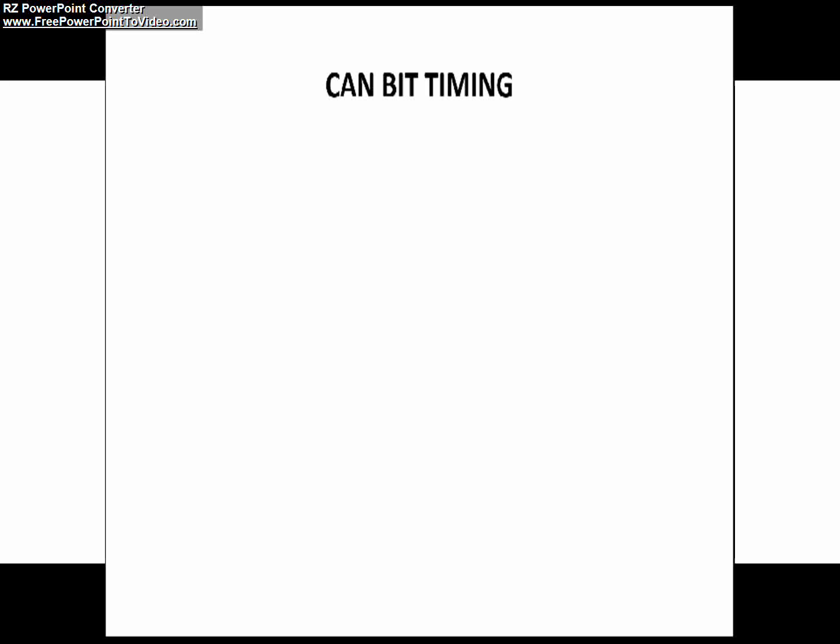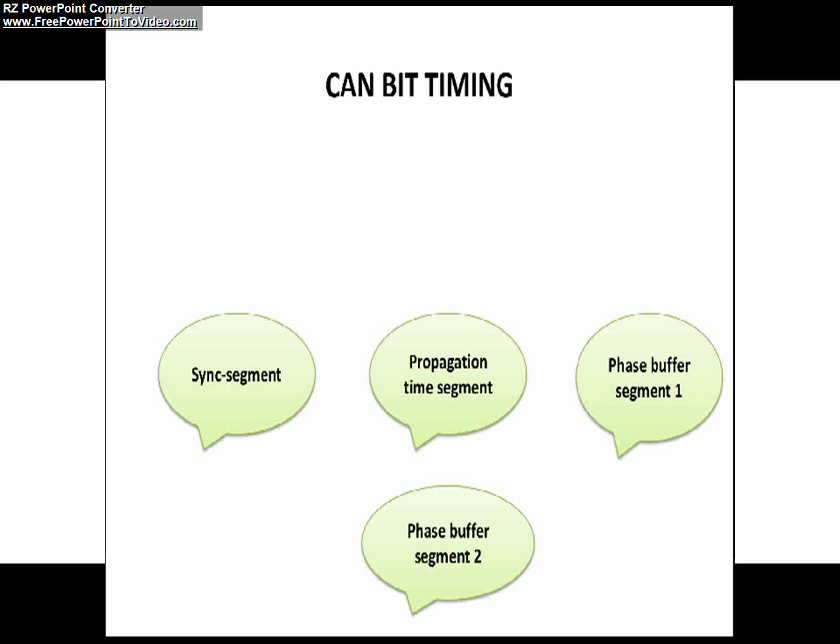Now we'll see how bit time is divided into different segments in CAN protocol. Basically, there are four segments in a single bit time: sync segment, propagation segment, phase buffer segment one, and phase buffer segment two. Let's understand the purpose of each segment.